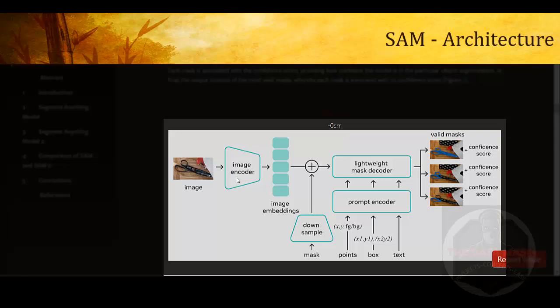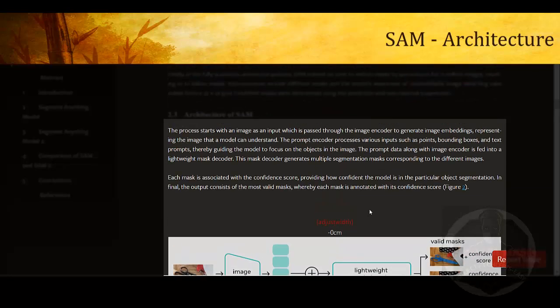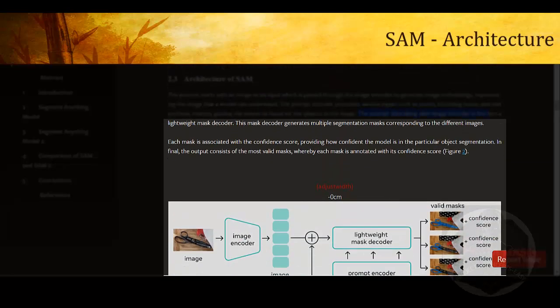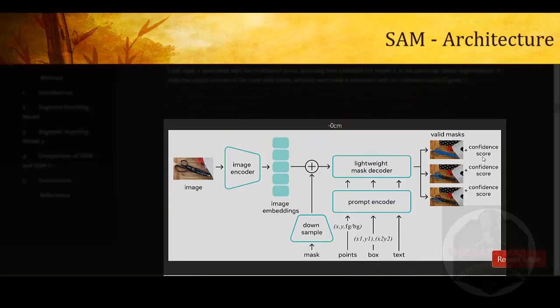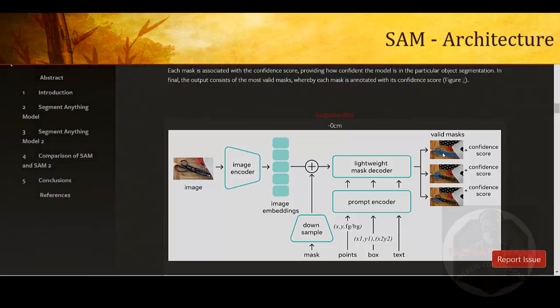Now let us see the architecture in more detail. Given an input image, the image will be encoded in image embeddings using a lightweight image encoder. Now image embeddings will be given as input to the lightweight mask decoder along with any prompts. The prompt data along with the image encoder is fed into the lightweight image decoder.